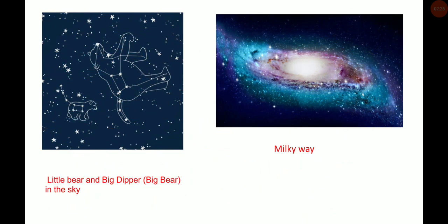See, you can see in the picture Little Bear and Big Dipper Big Bear. They are in the sky in the forms of stars, and you can see the milky way. Milky way means the band of light consisting of stars that spreads across the sky in the night.